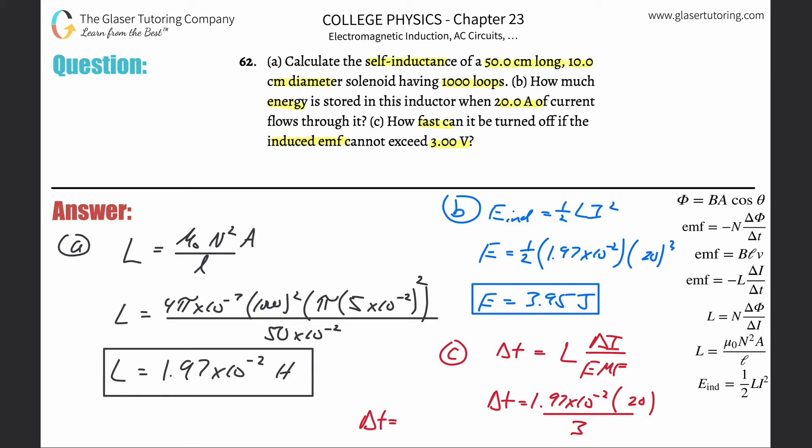Let's calculate that: take that answer from before, multiply that by 20, and divide it by 3. This works out to be about 0.132 seconds. And that's that, guys.